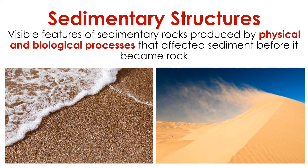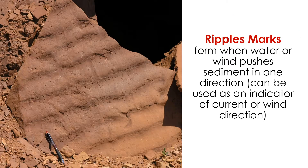Wind and wave are just two of many processes that create sedimentary structures. Let's begin by focusing on ripple marks — something familiar. Ripple marks are a textbook example of sedimentary structures. Just like the ripples on the beach and the sand dunes in the desert, ripple marks form when water or wind pushes sediment in one direction. Such ripple marks are very useful. If a geologist discovers ripple marks, they can determine the direction that the wind was blowing or the water was flowing in the past.